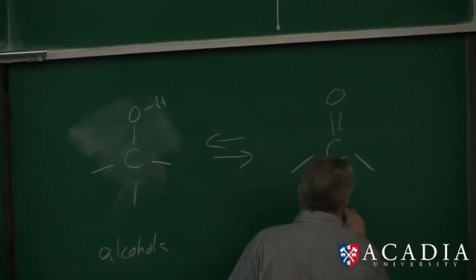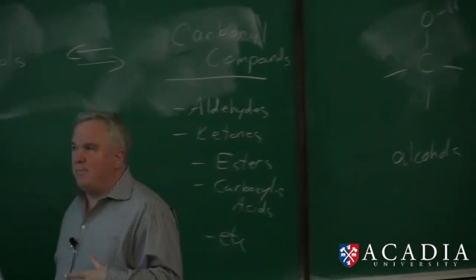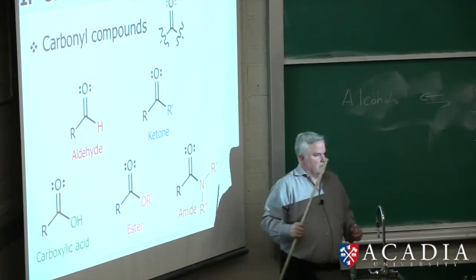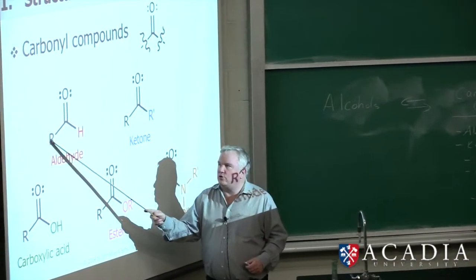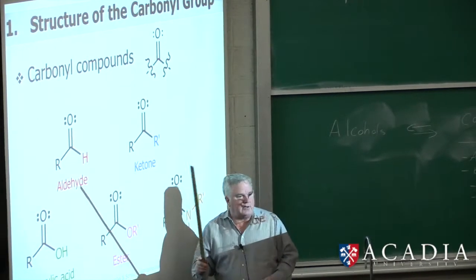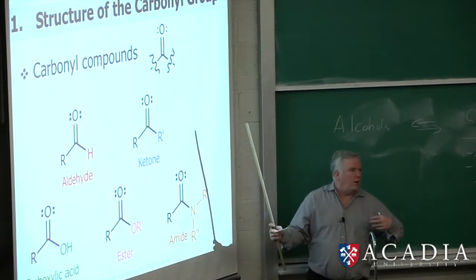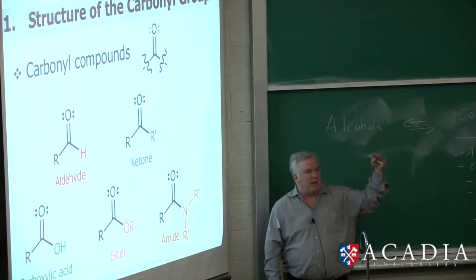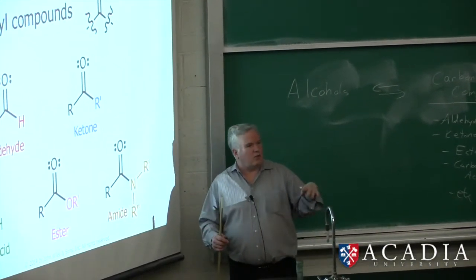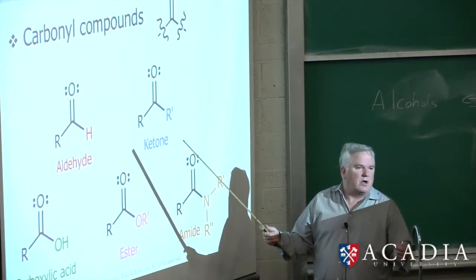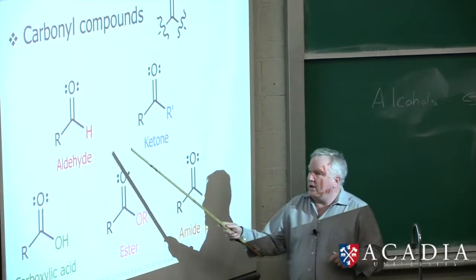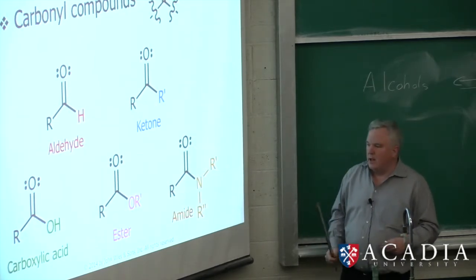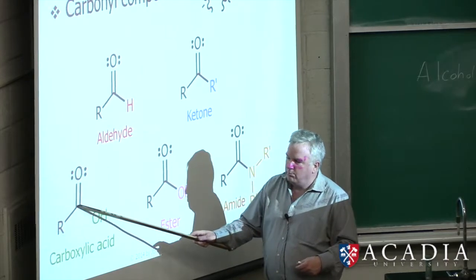So right away, looking at the alcohol and the carbonyl group: all these different molecules on the board contain this carbon-oxygen double bond — that's the carbonyl group. If we have an alkyl group bonded to the carbonyl carbon and a hydrogen, it's an aldehyde. A ketone has two R groups bonded to the carbonyl carbon. A carboxylic acid has an OH bonded to the carbonyl carbon.